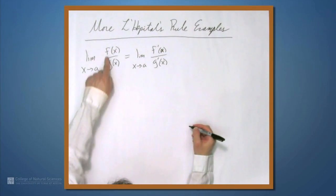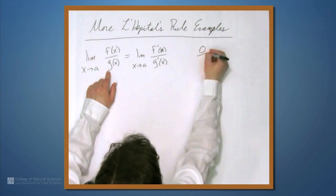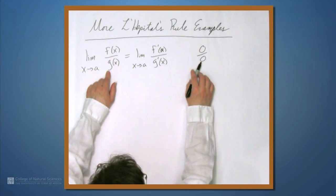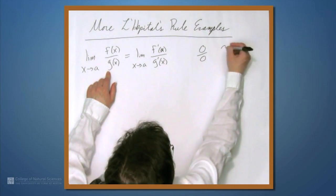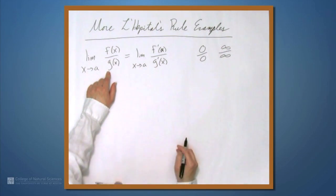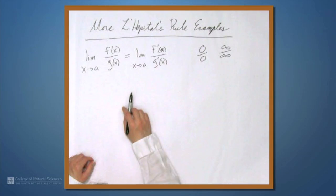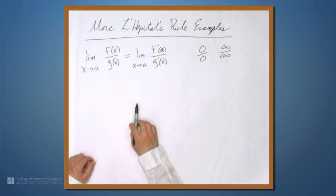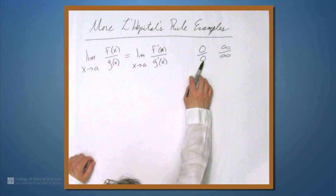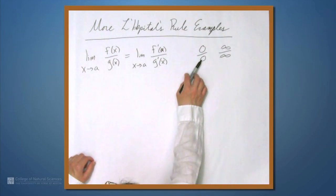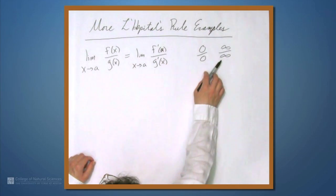This applies as long as f and g are both going to 0 — giving us what we call 0 over 0 — or they're both going to plus or minus infinity. They also have to be differentiable, otherwise we wouldn't be able to talk about f' and g'. These two cases are called indeterminate forms because it's not readily apparent what the limits should be if it's 0 over 0 or infinity over infinity.